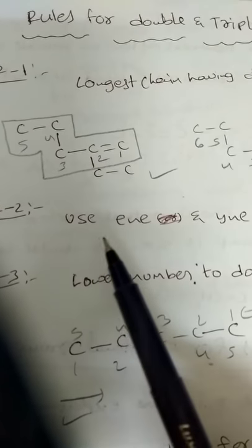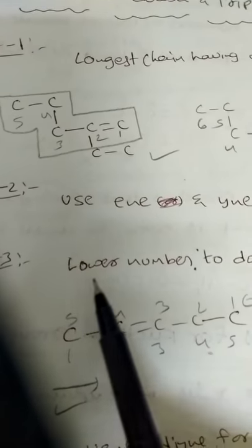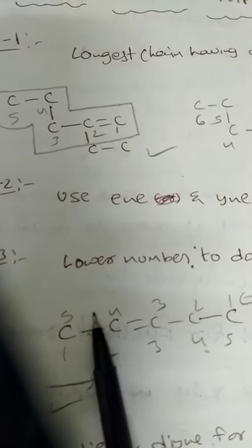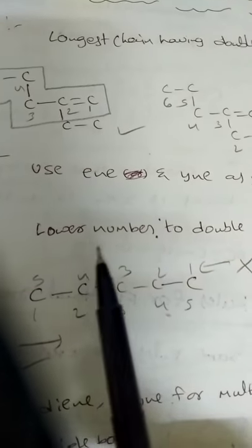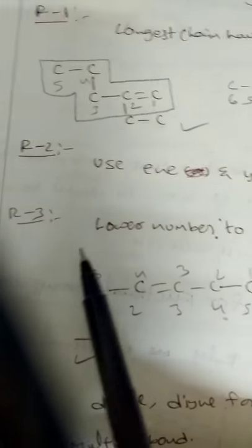Rule 2: use '-ene' and '-yne' as the suffix. Whenever there is a double bond between two carbon atoms, that is '-ene'. If a triple bond is present, that is '-yne'.